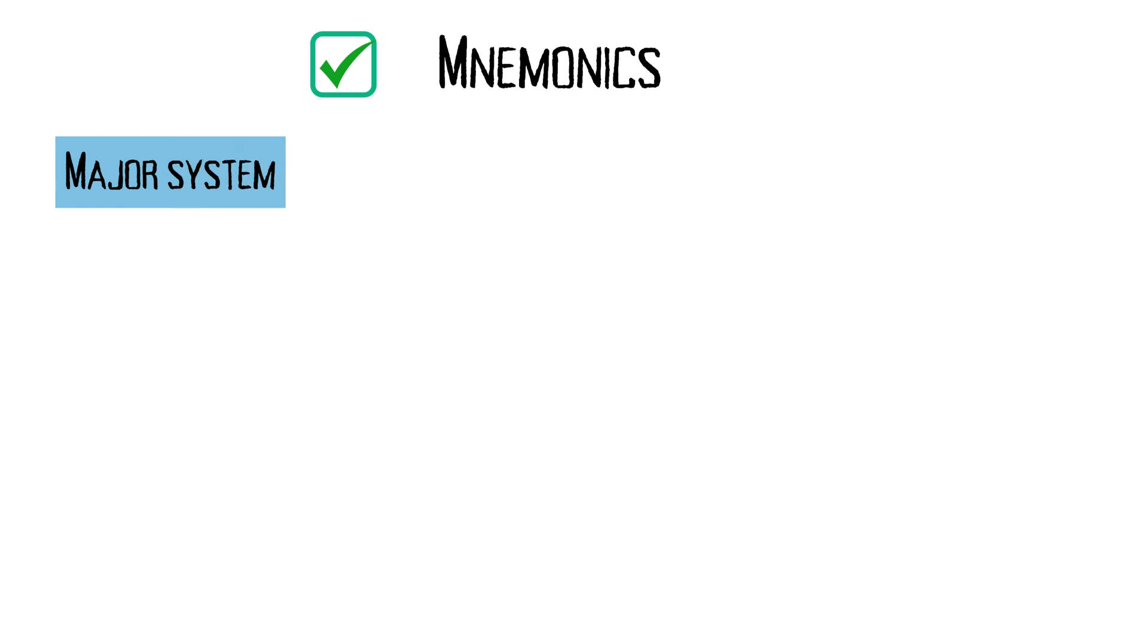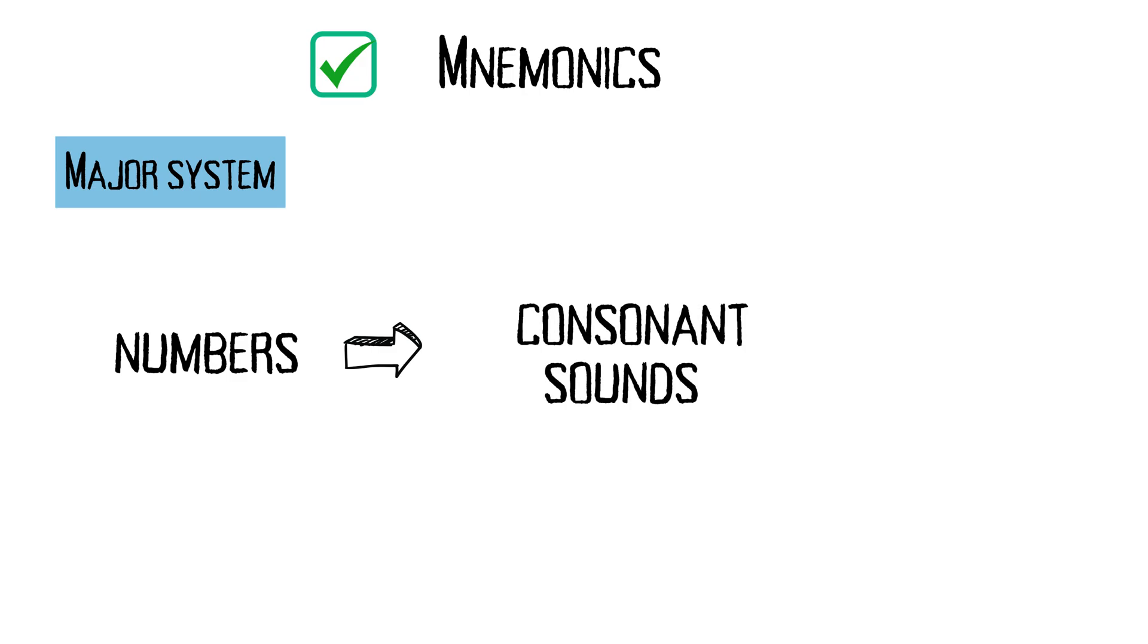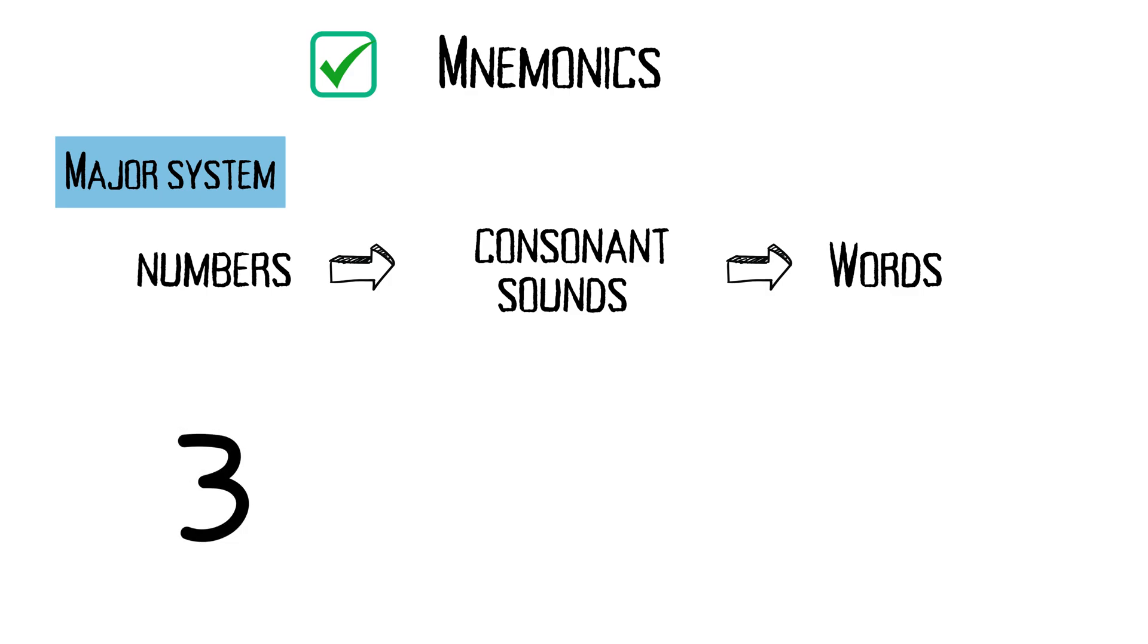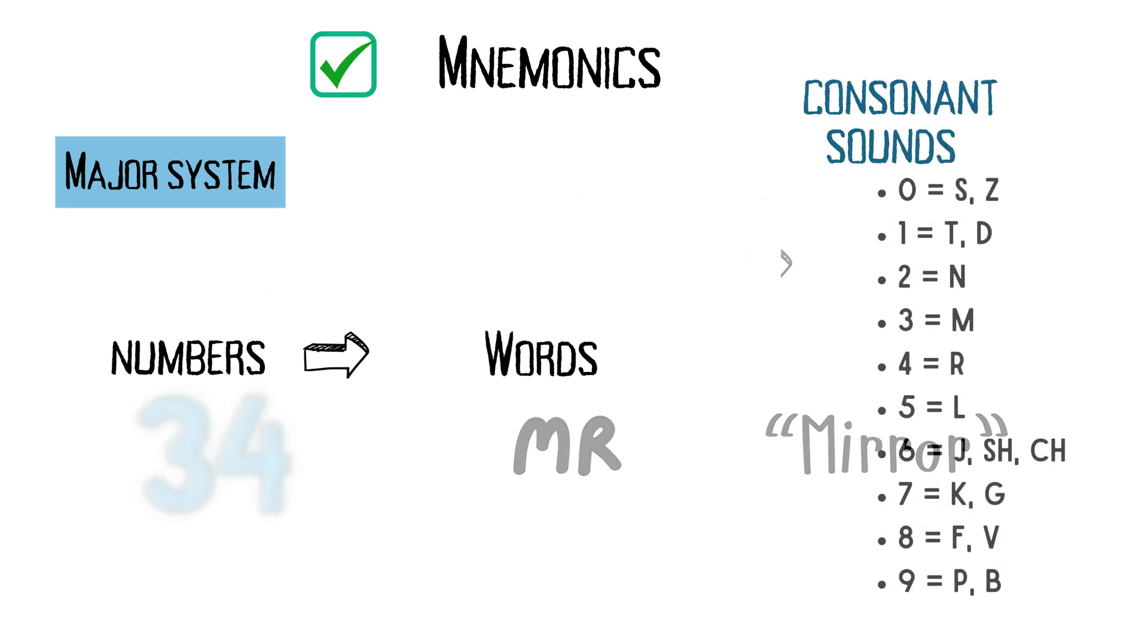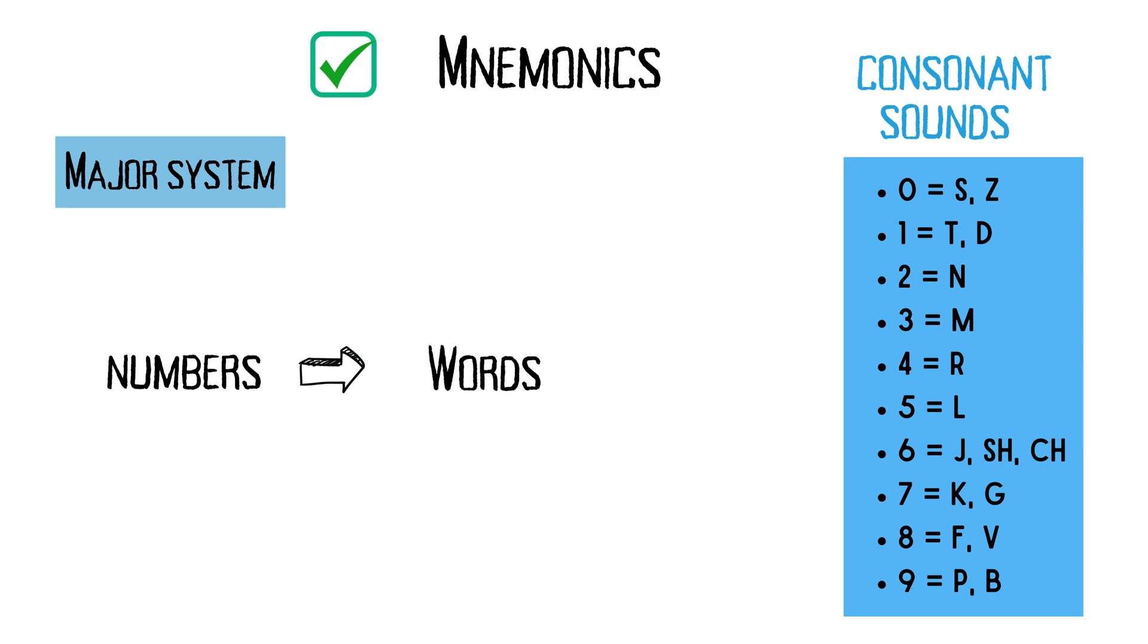Another advanced mnemonic technique is the major system, which converts numbers into consonants, sounds, and then into words. For example, the number three might be associated with the letter M because they look similar. To remember the number 34, you could create a word using the consonants M and R, such as mirror. By turning numbers into words, you create memorable images that are easier to recall.